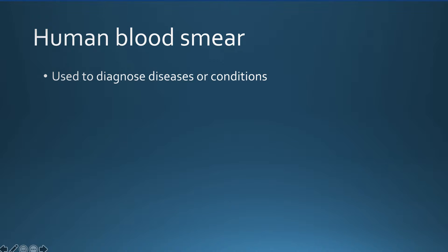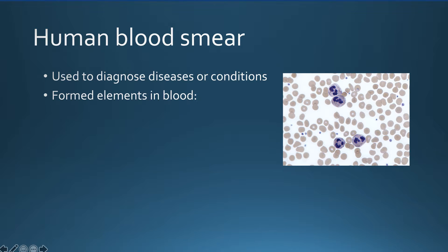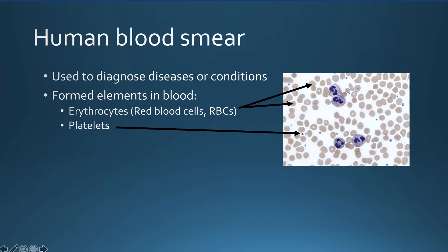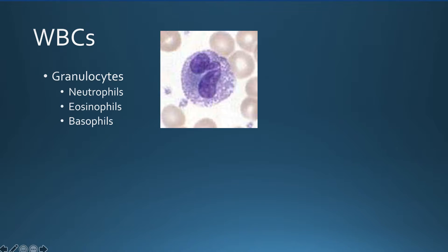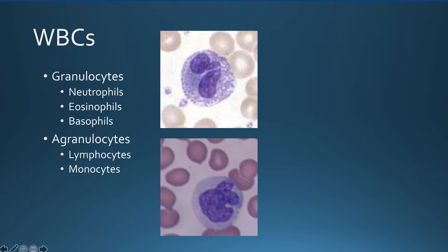Human blood smears are used to help diagnose diseases and conditions. Human blood consists of plasma, the liquid component of blood, and three formed elements: red blood cells, which carry oxygen and carbon dioxide; platelets, which play a role in blood clotting; and white blood cells, which protect the body against invading organisms. White blood cells can be classified as granulocytes, which have cytoplasmic granules, and agranulocytes, which do not.